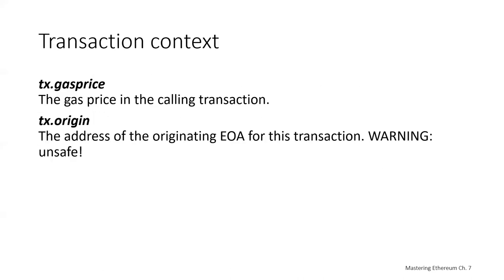Here are a couple of transaction context objects. The transaction object provides a means of accessing transaction-related information, like transaction gas price — the gas price in the calling transaction — and transaction origin, which is the address of the originating externally owned address for this transaction. Sometimes transaction origin can be unsafe, so don't rely on that.